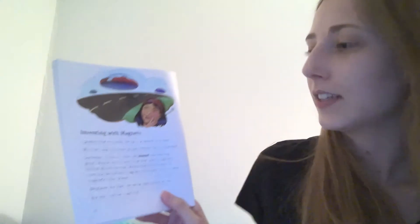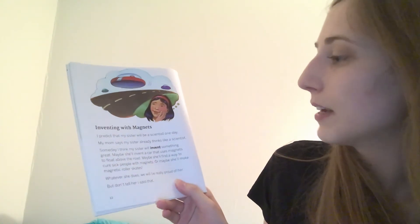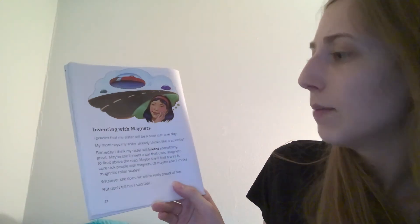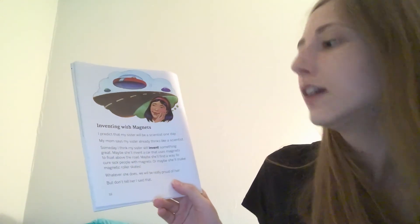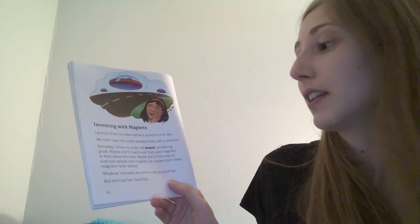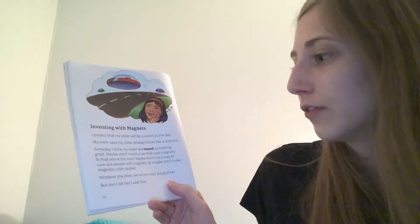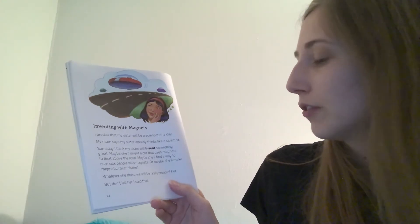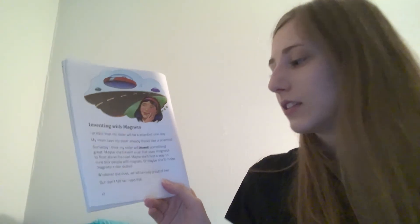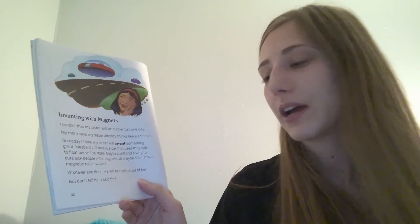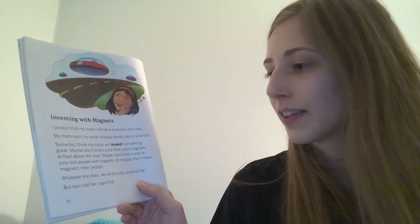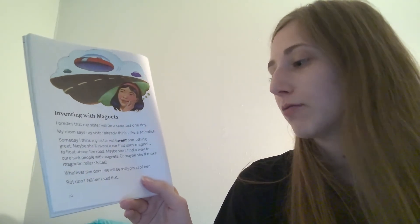Investigating with magnets. I predict that my sister will be a scientist one day. My mom says my sister already thinks like a scientist. Someday, I think my sister will invent something great. Maybe she'll invent a car that uses magnets to float above the road. Maybe she'll find a way to cure sick people with magnets. Or maybe she'll make magnetic roller skates. Whatever she does, we will be really proud of her. But don't tell her I said that.